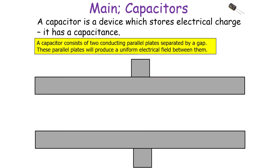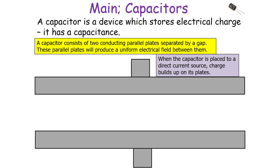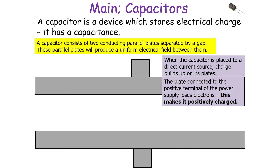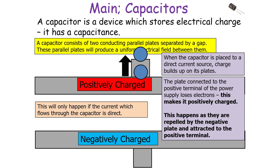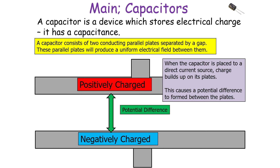A capacitor is a device which stores electrical charge and has a capacitance. It consists of two conducting parallel plates separated by a gap. These parallel plates produce a uniform electrical field between them, which is shown by the circuit symbol for a capacitor. When the capacitor is placed across a direct current source, charge builds up on its plates: the plate connected to the negative terminal gains electrons and becomes negatively charged, whilst the plate connected to the positive terminal loses electrons and becomes positively charged — repelled by the negative plate and attracted to the positive terminal.